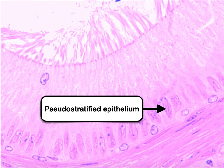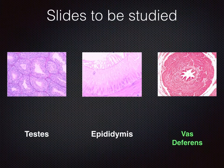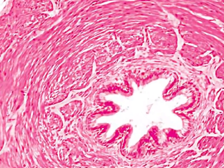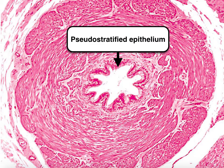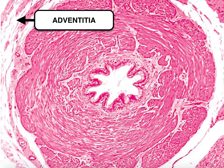The epididymis is lined by pseudostratified columnar epithelium. Our last slide is the vas deferens. It is also lined by pseudostratified columnar epithelium and is characterized by a thick muscular wall made up of smooth muscles arranged in inner circular and outer longitudinal layers. The outermost layer of the vas deferens is called the tunica adventitia.